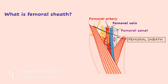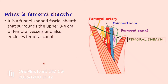Which are these blood vessels? The femoral artery, the femoral vein, and we also have a compartment here which looks almost empty and has a lymph node — this compartment is known as the femoral canal. So the femoral sheath can be defined as a funnel-shaped fascial sheath that surrounds the upper 3 to 4 centimeters of the femoral vessels and also encloses the femoral canal.